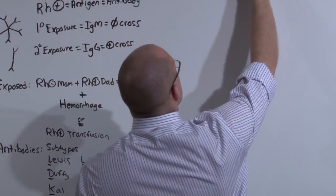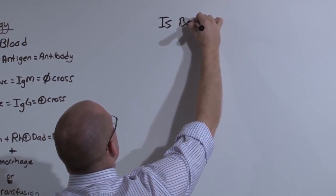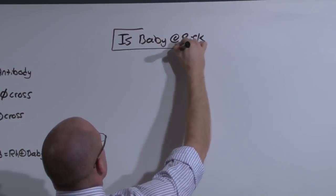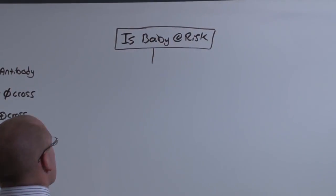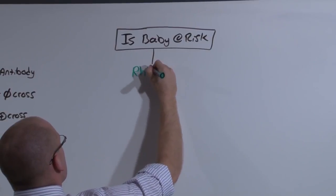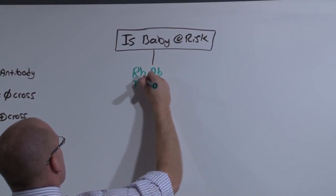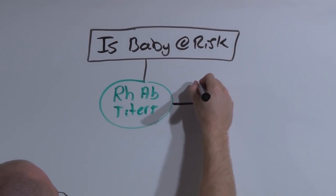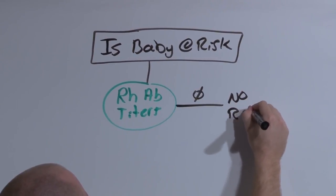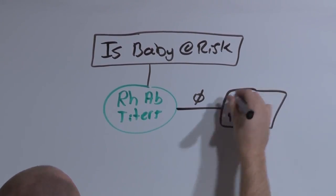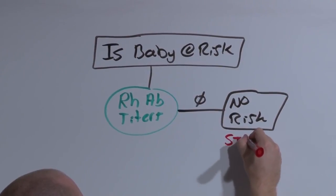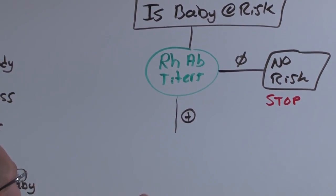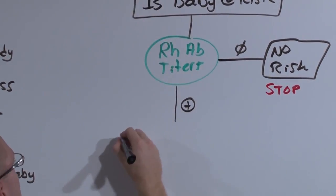So if you have that rare combination of an Rh negative mom with an Rh positive dad who could have had an Rh positive baby, who has already had an Rh positive baby previously, who has the right subtypes and an adequate titer, you first have to ask is this baby even at risk? So you've got the potential. First thing you're going to do is get those Rh antibody titers.